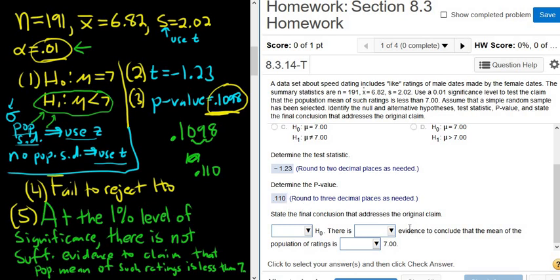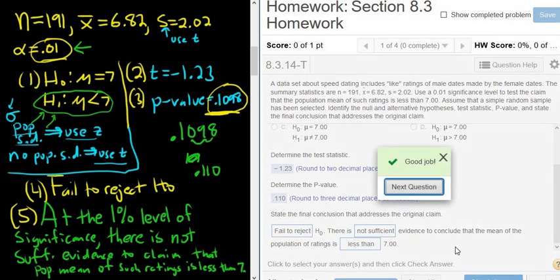And this is state the final conclusion that addresses the original claim. So we failed to reject H sub zero. Nice. It's one of the choices. And in this case, there is not sufficient evidence. So not sufficient evidence to conclude that the mean of the population ratings is less than seven. So everything matches what we have written down, which is really nice. Click check answer. And that's it. I hope this video has been helpful.